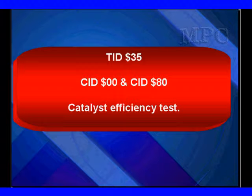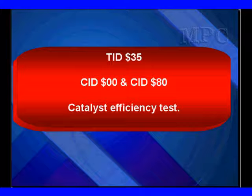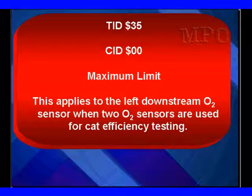This is test ID 35, component ID 00 and 80. This is a catalyst efficiency test. The 00 indicates we have a maximum limit.